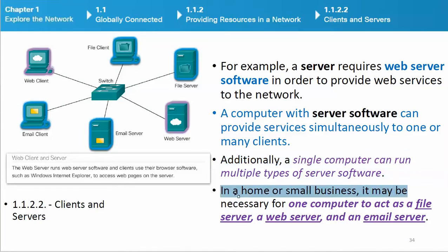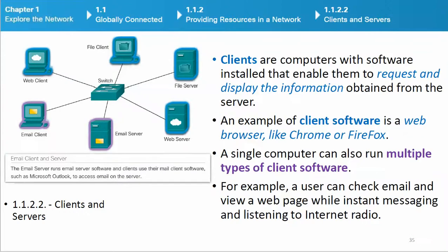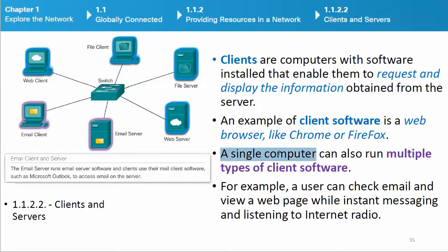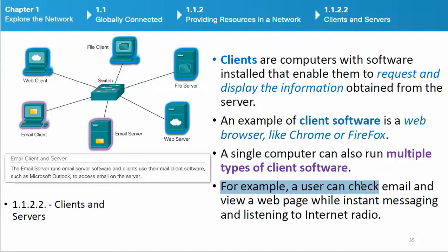In a home or small business, it may be necessary for one computer to act as a file server, a web server, and an email server. Clients are computers with software installed that enable them to request and display the information obtained from the server. An example of client software is a web browser, like Chrome or Firefox. A single computer can also run multiple types of client software — for example, a user can check email and view a web page while instant messaging and listening to Internet radio.